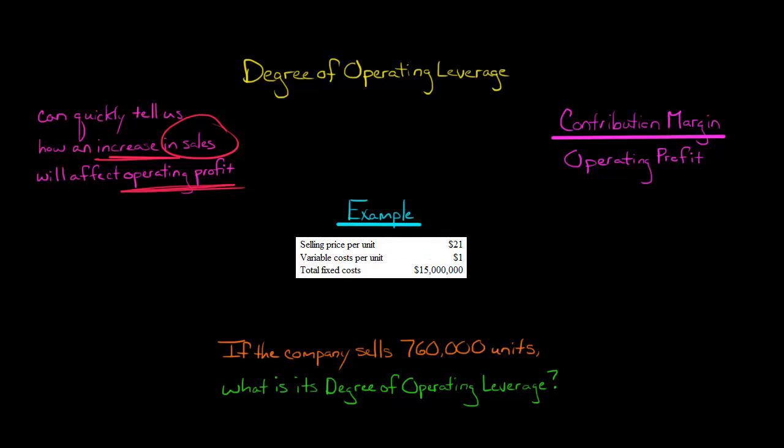So now we're going to use this information, but we also need to know how many units the company expects to sell. The degree of operating leverage is not a constant at any level of sales. You have to specify a specific sales level. So we're going to assume that 760,000 units are sold.